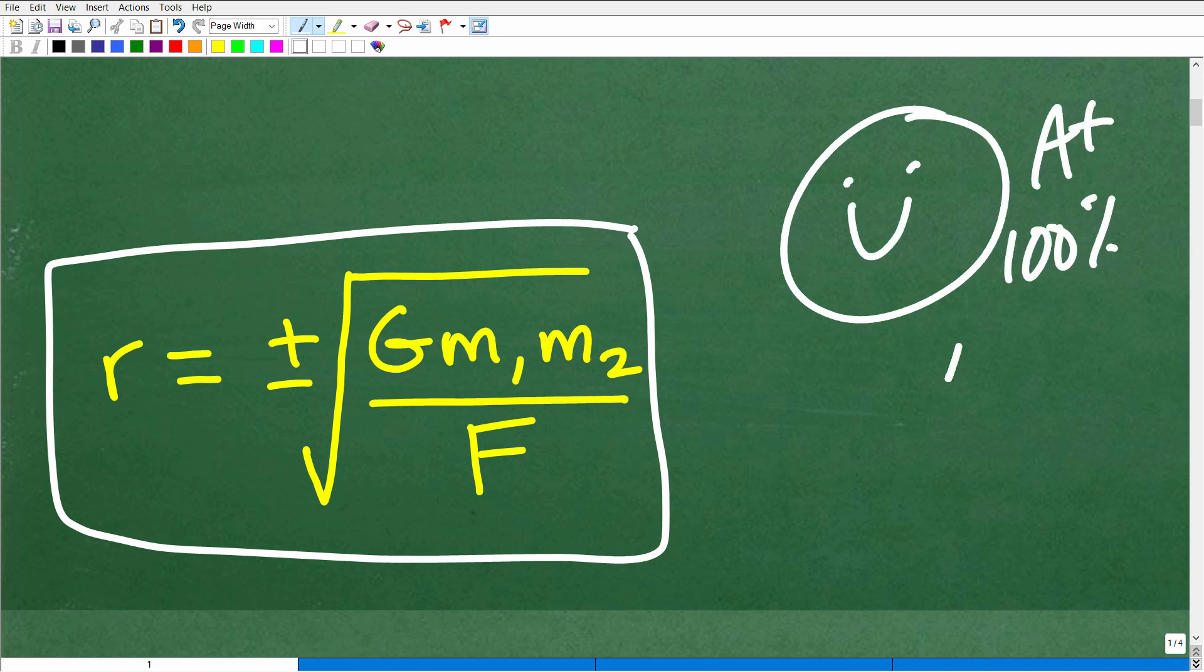Let's give you a nice little happy face and A plus, a 100% and a few stars so you can tell your friends and family that you know exactly how to solve for a specific variable in an equation where there's multiple variables.